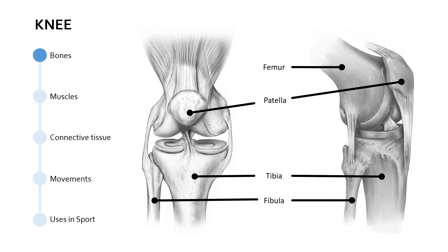Of course there's also the patella, which is often simply referred to as the kneecap. I also want you to note in the centre of the joint itself — not strictly bones, it's actually cartilage — we've got what are known as menisci. We've got the medial meniscus, a C-shaped fibrocartilage sitting on top of the tibia on the inside of the joint, and on the outside of the joint, the lateral meniscus.